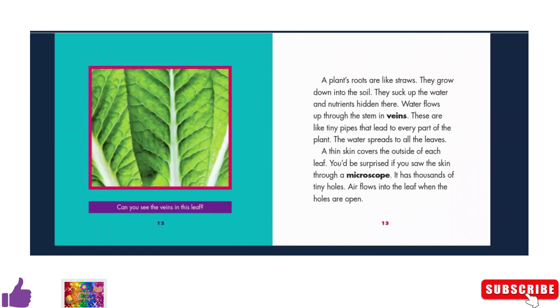Can you see the veins in this leaf? A plant's roots are like straws. They grow down into the soil. They suck up the water and nutrients hidden there.